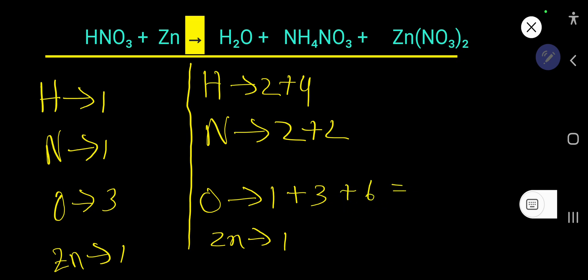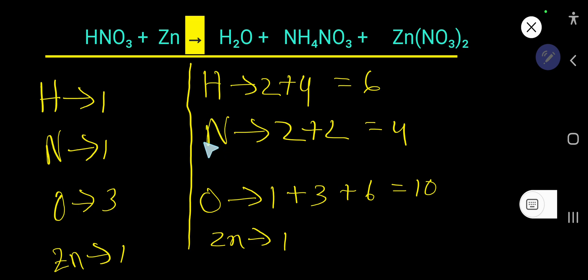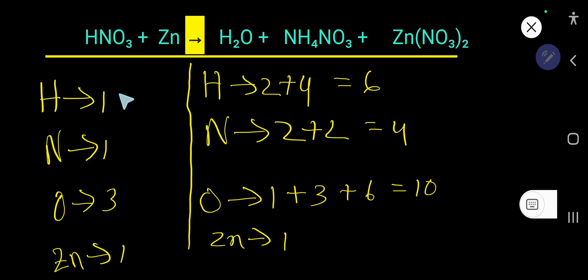So we have totals of 10 hydrogen, 4 nitrogen, 6 oxygen on the right. We'll try to balance the atom that is present in only one compound first. Nitrogen is present in 2 compounds, oxygen in 3 compounds, hydrogen in 2 compounds — so no atom is present in only one compound. Zinc is already balanced, so let us try to balance hydrogen first: 6 on one side, 1 on the other.